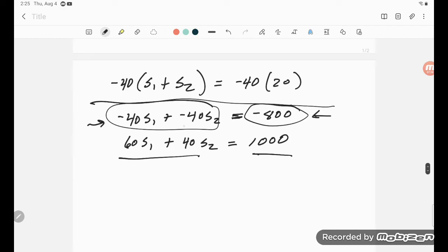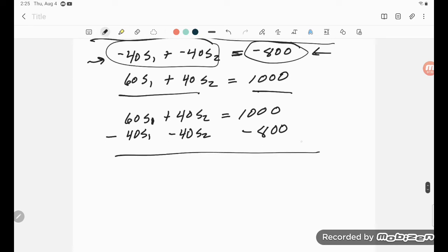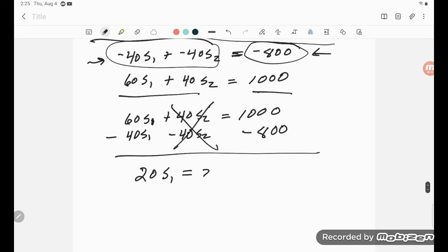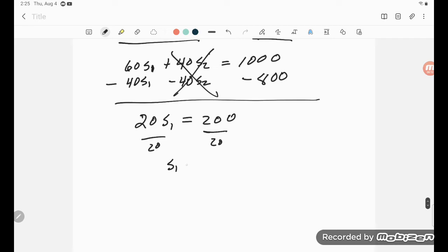So I take the 60 S1 plus 40 S2 equals 1,000, and I subtract 40 S1, and I subtract 40 S2, and subtract 800. I'm subtracting the same amount from both sides. When I do that, what happens is that disappears, and I get 20 S1 equals 200. Now I can divide both sides by 20, and I get S1 equals 10.